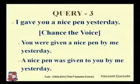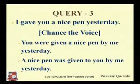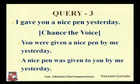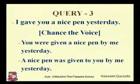One object is 'you' and the second object is 'a nice pen'. When there are two objects, one is considered a direct object and the second is an indirect object. You can change the sentence into passive voice using any of these objects. The sentence can be started with 'you' or with 'a nice pen'. The first answer: 'You were given a nice pen by me yesterday' — here 'you' is the indirect object. The second answer: 'A nice pen was given to you by me yesterday' — here 'a nice pen' is the direct object.